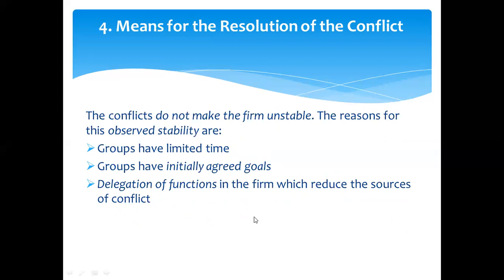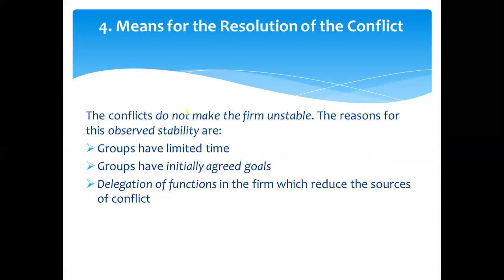Although different groups within the firm have conflicting goals, these conflicts do not make the firm unstable. The reasons for this observed stability are: first, groups have limited time and therefore cannot pursue their goals for a long period; second, groups have initially agreed goals — they may have entered into an initial agreement with the firm and therefore cannot pressurize the firm beyond a particular level.